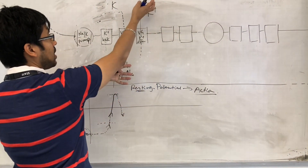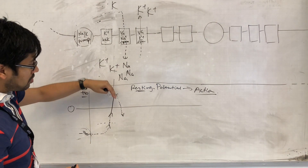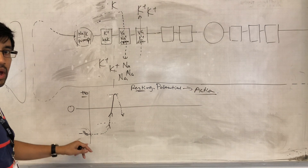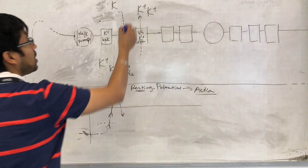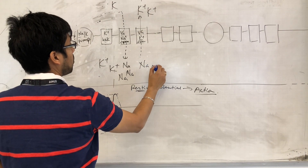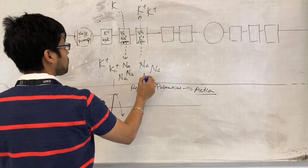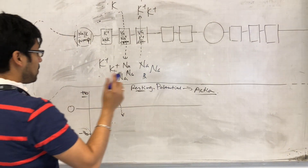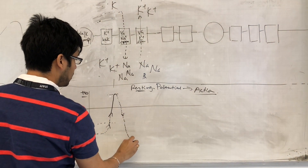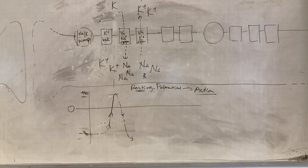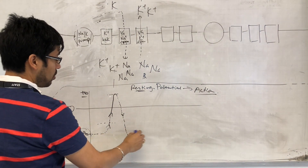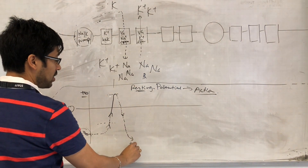Because the positive ions are leaving the cell, the charge inside the cell starts to go back down again, back towards the negative. Eventually we get a lot of potassium out here and the sodium in here. Then we get so much potassium going out that it overshoots a little bit — more than what it would take to get back to minus 70 — and so this we call hyperpolarization.